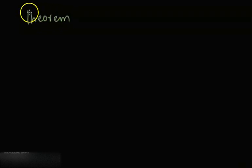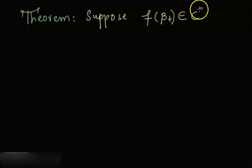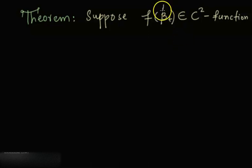Let me state the simplest Ito Lemma in the form of a theorem. Suppose we have a function f(x), or f depending on Brownian motion, and it is a C2 function. A C2 function means it is twice differentiable and its second derivative is also continuous.